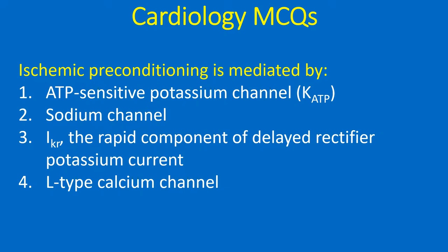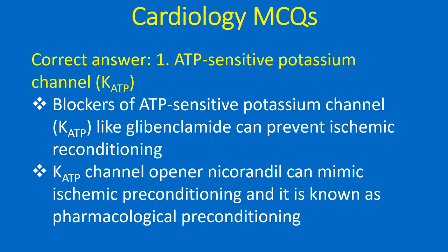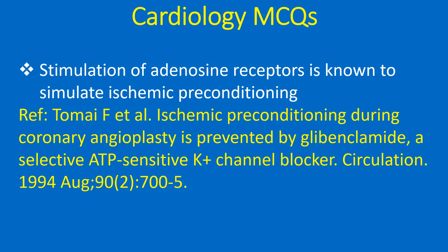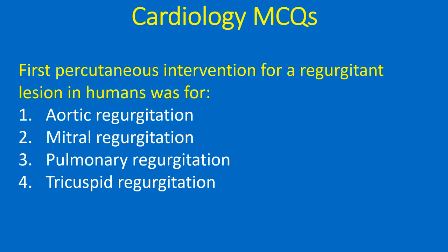Discussion of Cardiology multiple choice questions. Ischemic preconditioning is mediated by: 1. ATP-sensitive potassium channel (K-ATP), 2. Sodium channel, 3. IKR - the rapid component of delayed rectifier potassium current, 4. L-type calcium channel. Correct answer: 1. ATP-sensitive potassium channel. Blockers of ATP-sensitive potassium channel like glibenclamide can prevent ischemic preconditioning. K-ATP channel opener nicorandil can mimic ischemic preconditioning and is known as pharmacological preconditioning. Stimulation of adenosine receptors is also known to simulate ischemic preconditioning.